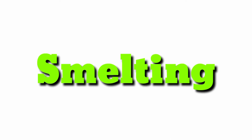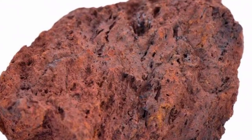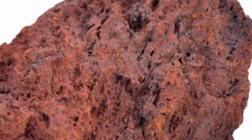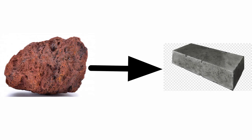Smelting is a process by which a metal is obtained at temperatures beyond the melting point from its ore. An ore is a naturally occurring solid material from which a metal or valuable mineral can be extracted profitably. Through smelting, an ore can be converted into its purest form.